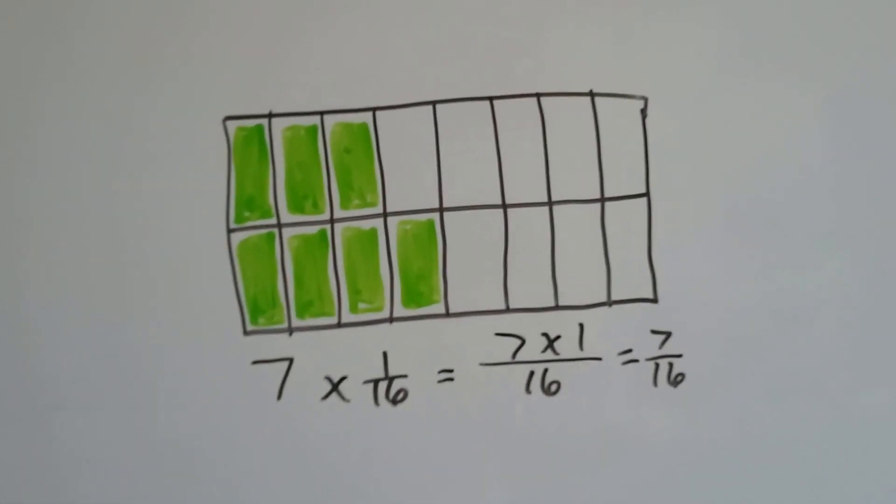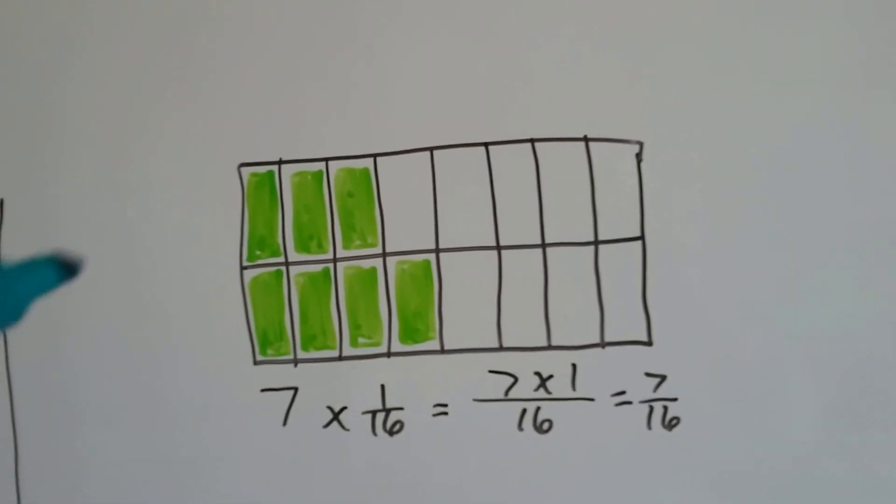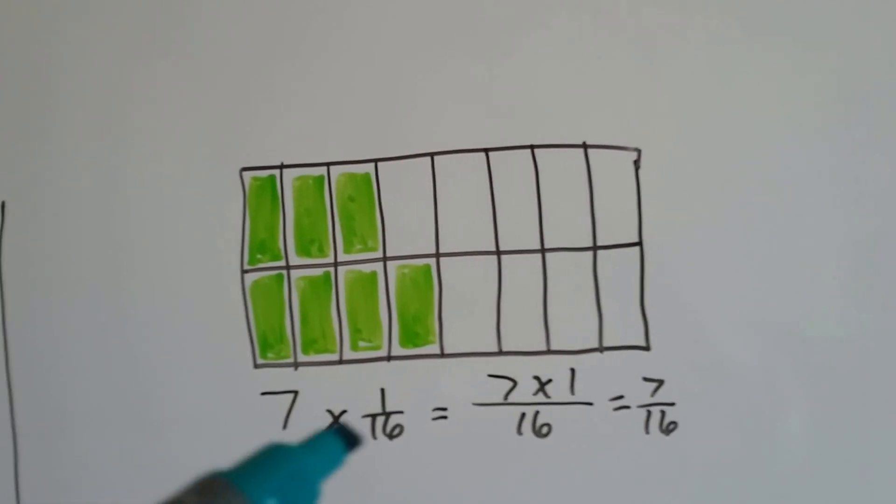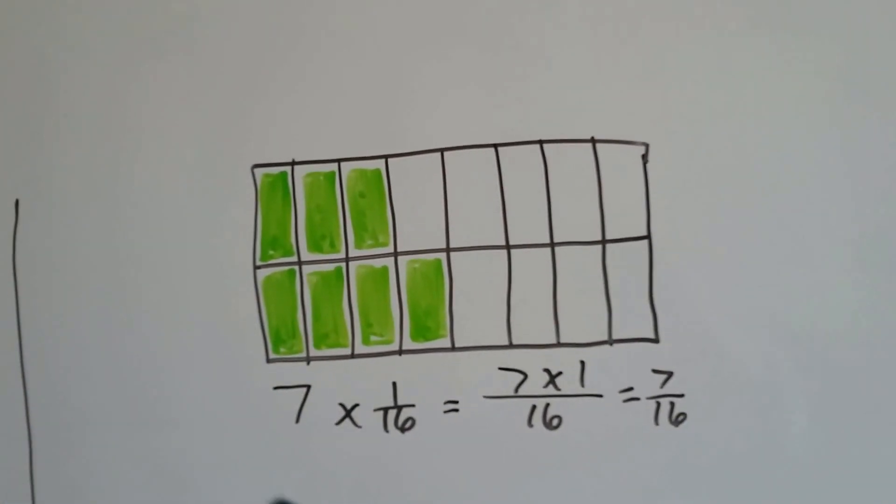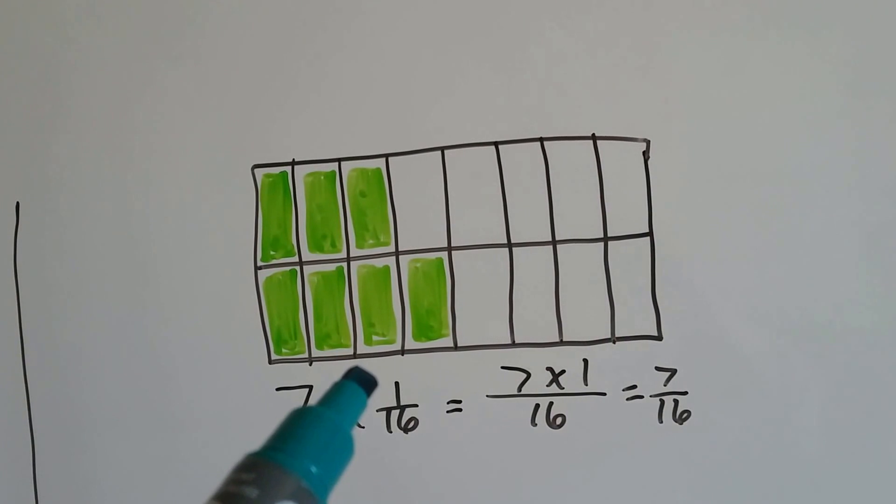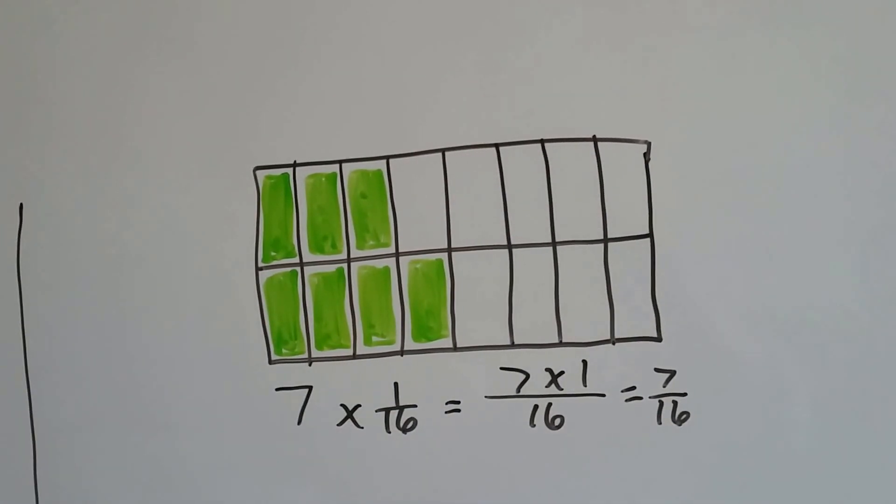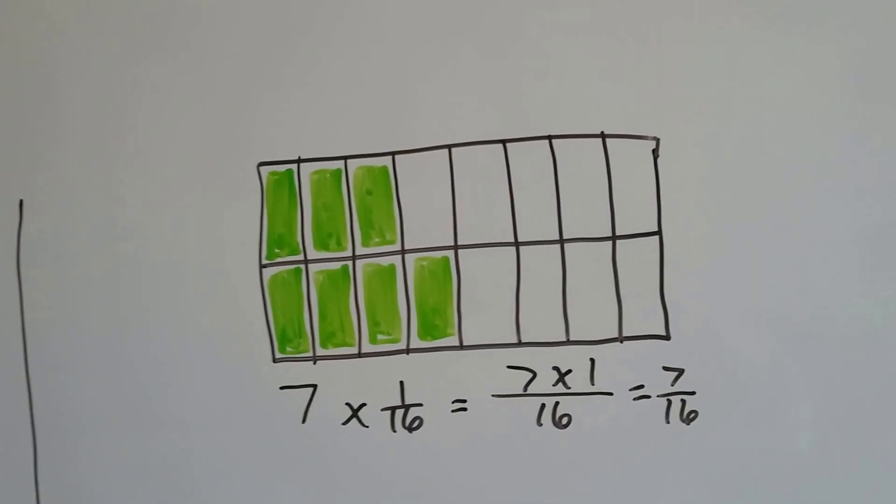If we had a box with 16 parts, and 7 of the parts were filled, we'd have 7 times 1/16. It would be like putting the 7 up on top of the numerator and multiplying, and sliding the denominator over. 7 times 1 over 16.